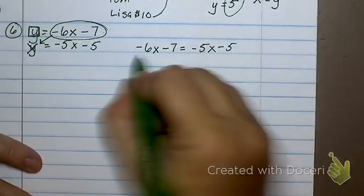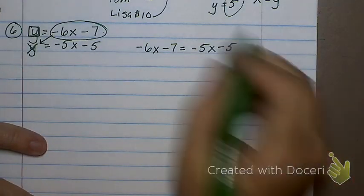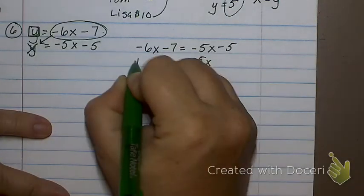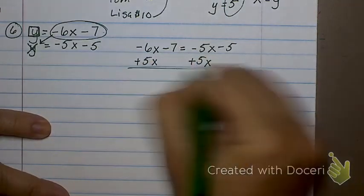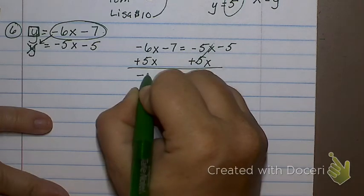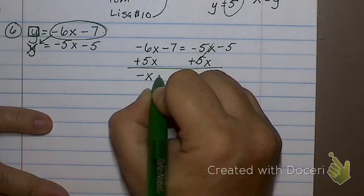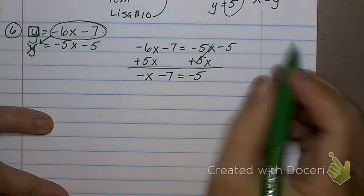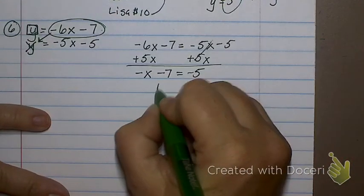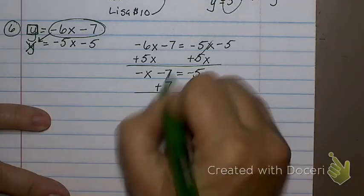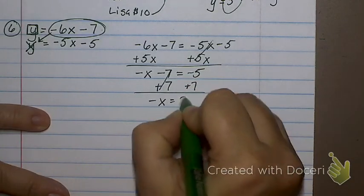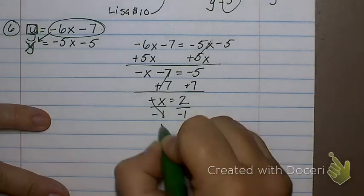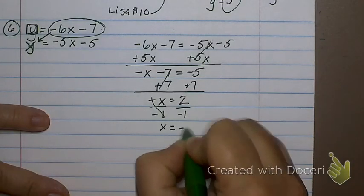So how am I going to solve this now? I'm going to add 5x. Negative x minus 7 equals negative 5. Now I'm going to add 7. So negative x is equal to positive 2. Divide by negative 1. And x equals negative 2.